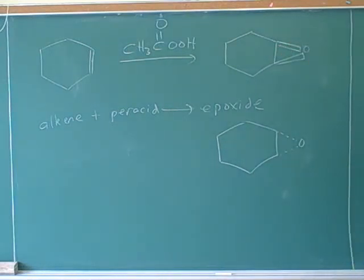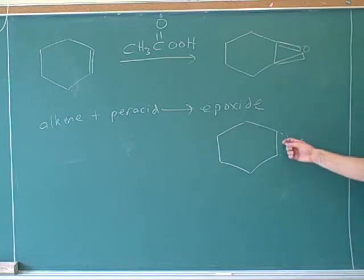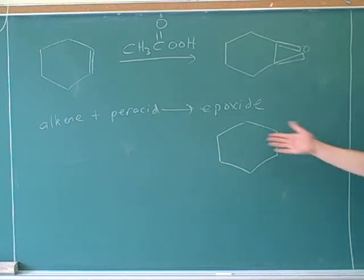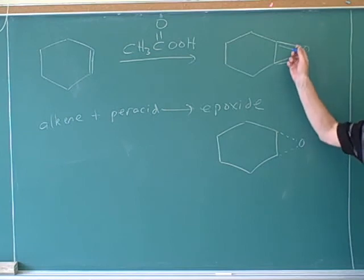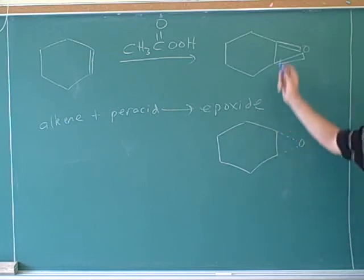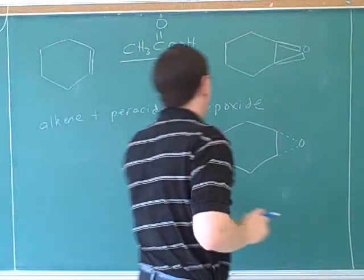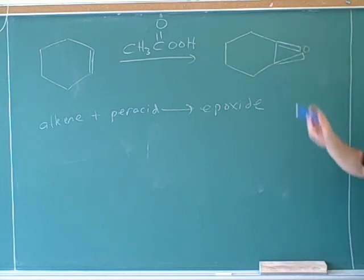When we get that maximum of two products, we always have to ask whether those are really the same or different things. If there's some way to rotate or flip the molecule so it looks identical, then we don't really have two products. For the cyclic epoxide, all we have to do is flip it — taking the oxygen from behind the board to in front. So in this particular case we erase one product, because they are the same. We only get one product.